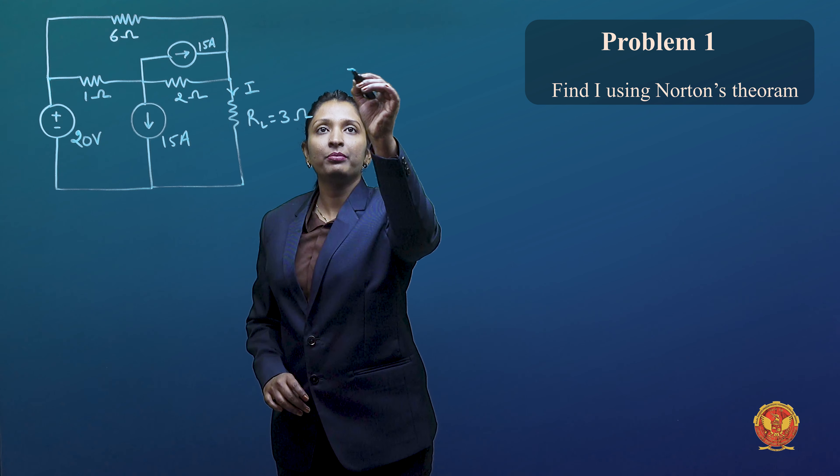After finding out ISC, which is 15 amperes, now we have to find RTH — the Thevenin resistance. To find the internal resistance, we replace all independent sources: short circuit voltage sources and open circuit current sources.